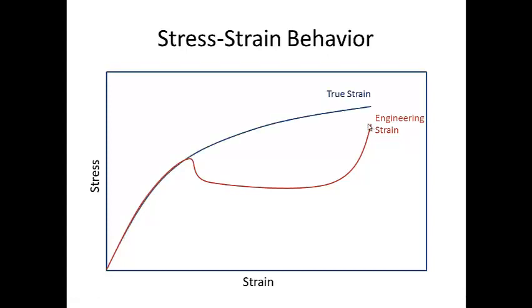Now if we plotted on top of this the true strain, which takes into account the fact that the cross-sectional area is reducing, we see that we get a much more natural-looking curve, that the stress continually increases on the material as we strain it. And just keep in mind that the difference between these two curves is due to the fact that in engineering strain, we're assuming a constant cross-sectional area, whereas in true strain, we're taking into account the fact that the area is changing as we pull on the material.